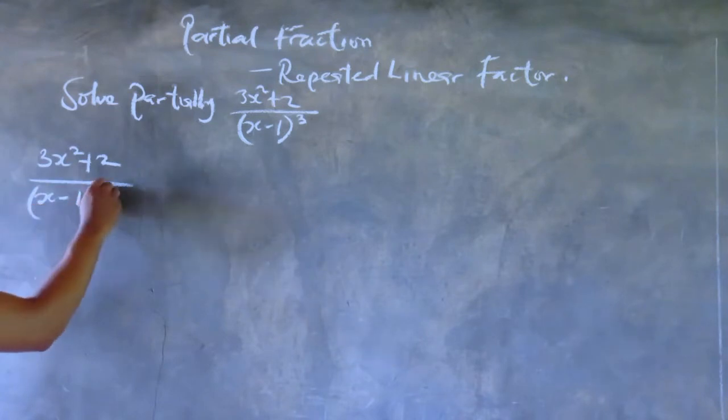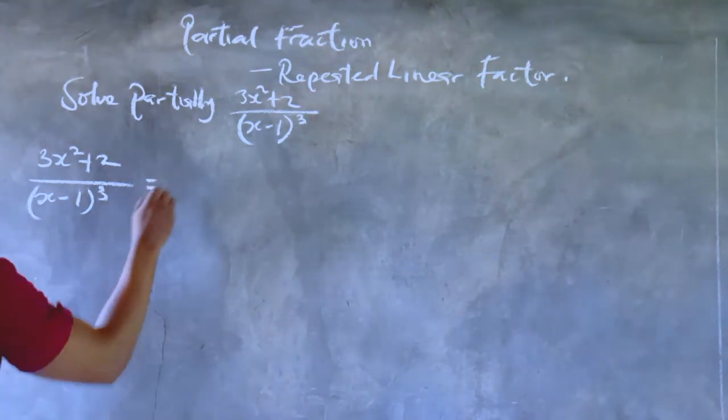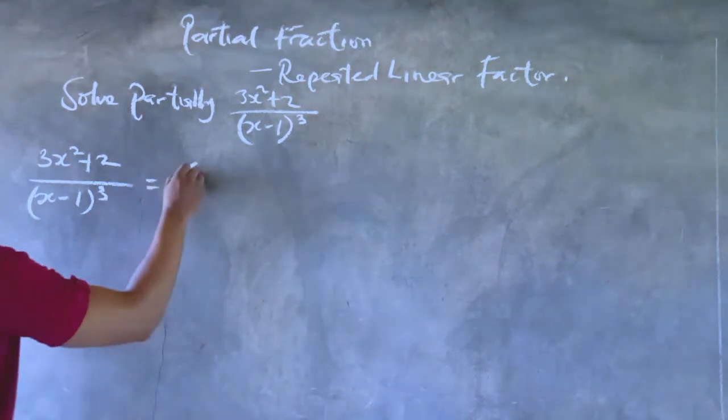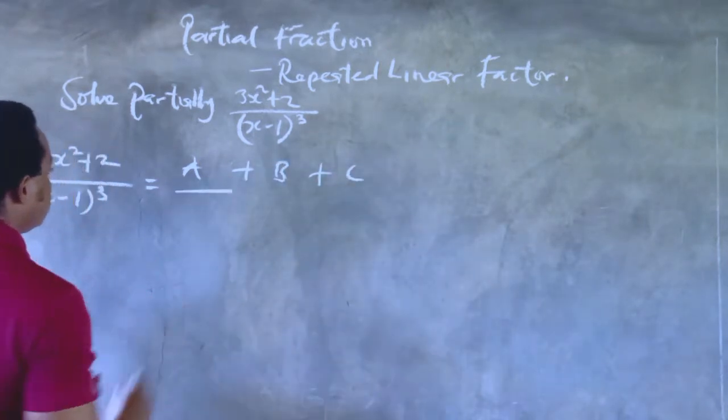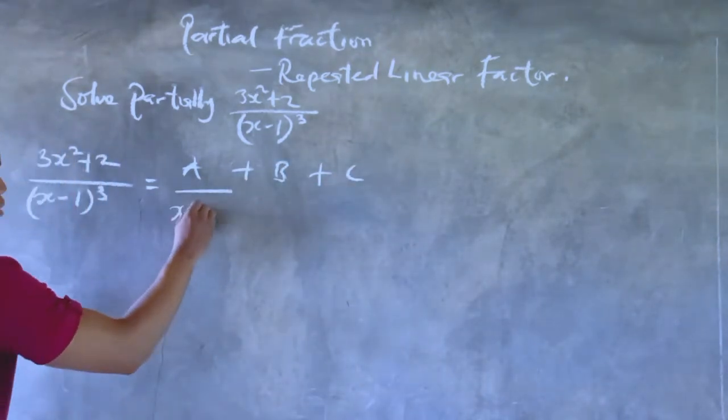So the problem we have to deal with in this problem is 3x squared plus 2 all over (x minus 1) raised to power 3. So we have the denominator to the power of 3, so there will be 3 factors there. So there will be 3 constants A, B, and C.